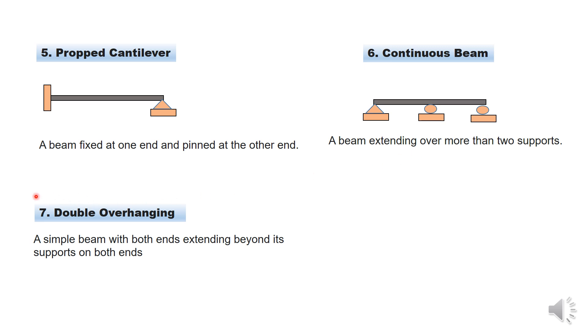Next is what they call double overhanging. Overhanging beam is all about a beam that extends beyond the support. Now they say double overhanging beam. When you have double overhanging beam, it means that the beam, the two ends, extend beyond the supports. Such a scenario is called double overhanging beam.